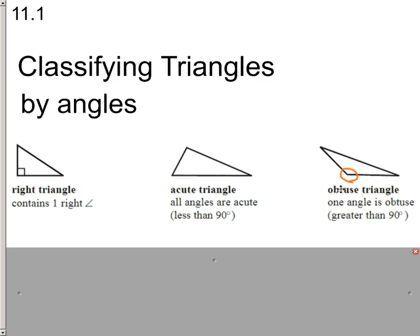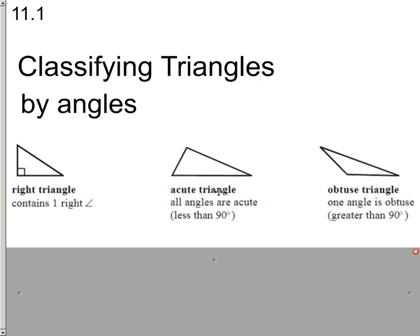Another thing to remember is that all three angles together, if you add them up in any triangle, the internal angles always equal 180 degrees. For example, if we knew that one angle was 130 degrees, that only gives you 50 degrees left over to split between the other two angles. So you would have two acute angles, but it's still an obtuse triangle because of that one large obtuse angle. If it's got one right angle, it's a right triangle. If it's got one obtuse angle, it's an obtuse triangle. If they're all less than 90 degrees, we call it an acute triangle.